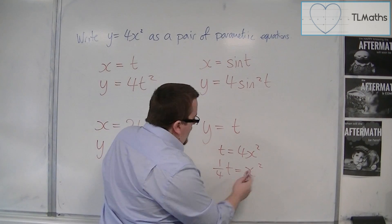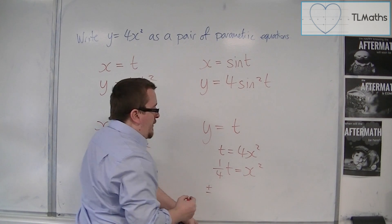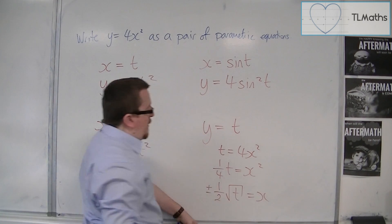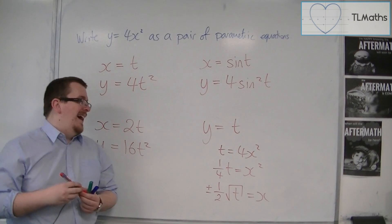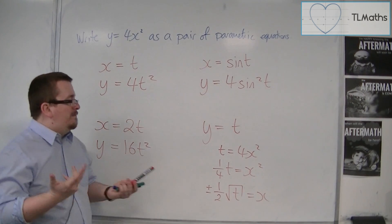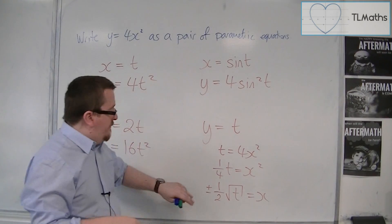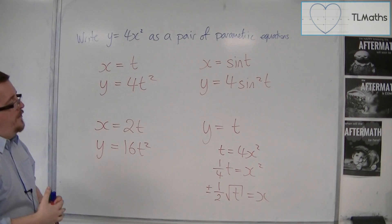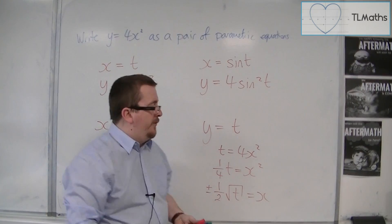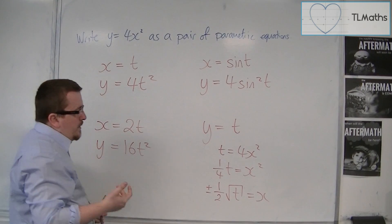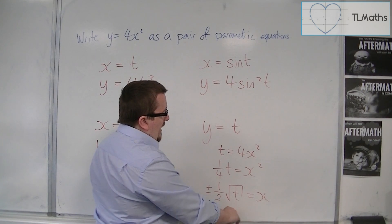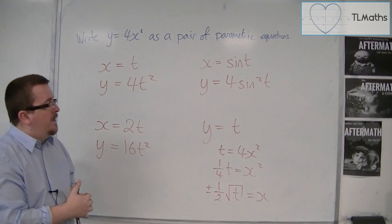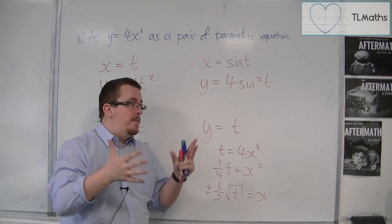And then, if you square root both sides, you'd have to bring about this plus minus. Square root of the quarter is a half, and you'd have root t equals x. So x equals positive half root t and negative half root t. Now the problem here is that we have these two versions of x. And although it's correct, if you were to plot, go on to Autograph or Desmos or another graphing math package, you'd put in half root t as x and y as t, and then you'd have to do another part of the curve, x equals minus a half root t and y equals t, and it would give you two sections of the curve that could then be brought together.